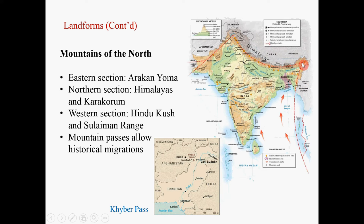The northern section has mountains such as the Himalayas and Karakoram. These mountains separate South Asia from East Asia — specifically, they separate India, Nepal, and Bhutan from Tibet of China.